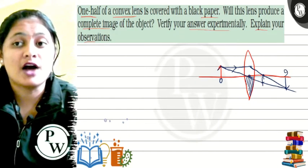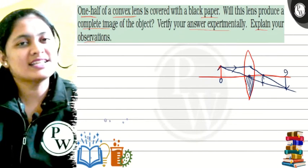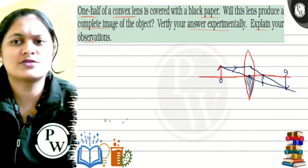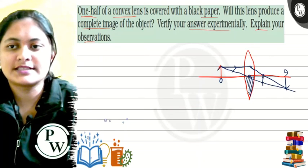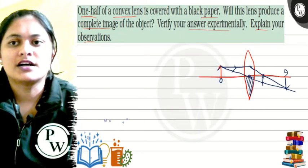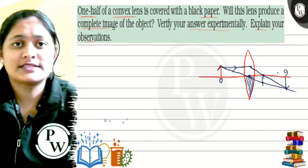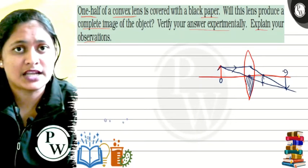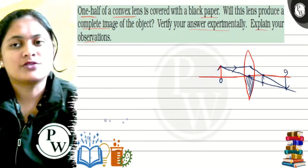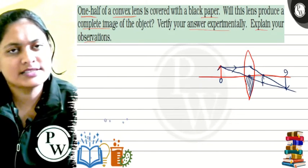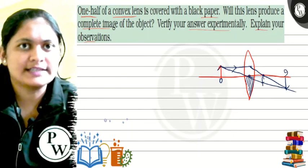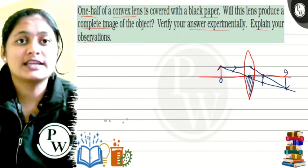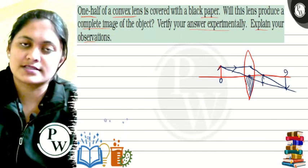But yes, the intensity of the image — if the lens is full, more light will pass through and contribute to the image. When half is covered, the brightness is less. The intensity is less, but the image will still be made.